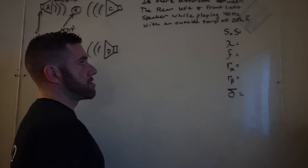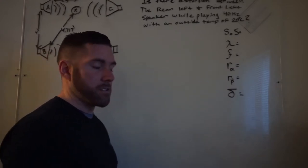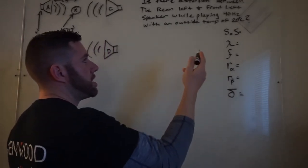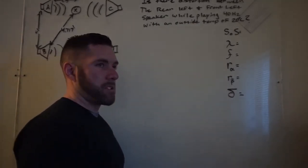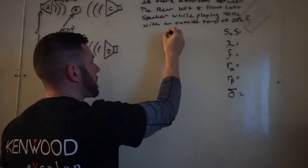So first off, it's 20 degrees Celsius. 20 degrees Celsius needs to be converted to Kelvin, not Fahrenheit, not Celsius. In order to do that, you simply add 273 to whatever the Celsius is. So in this case, it's 293.